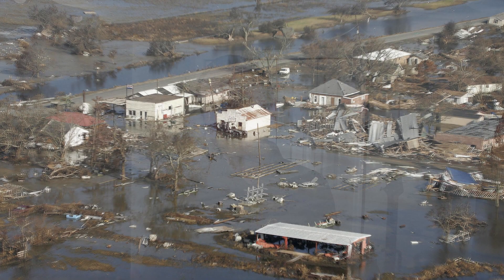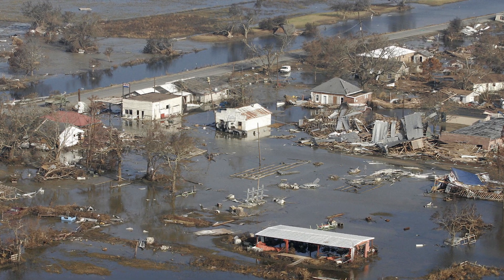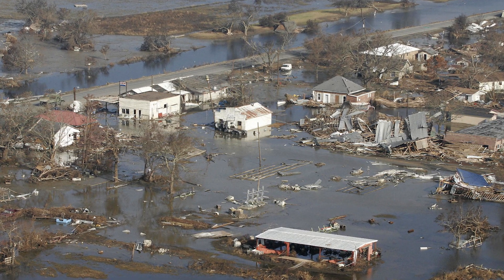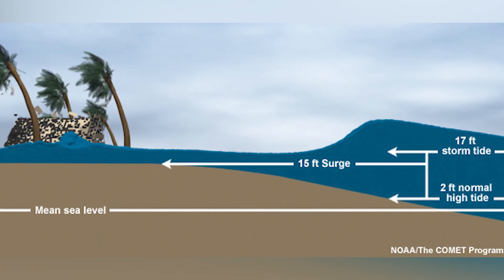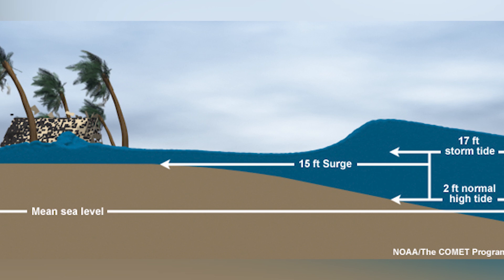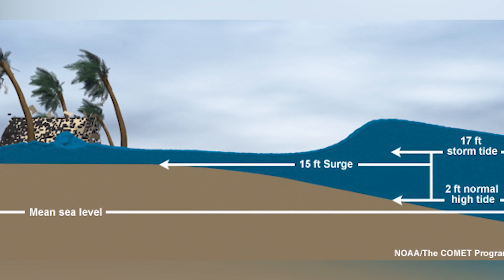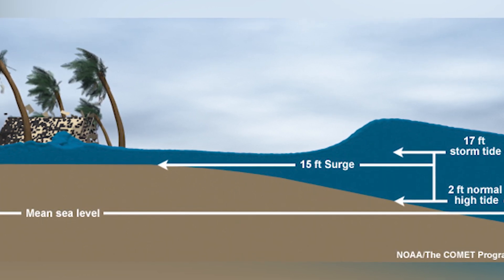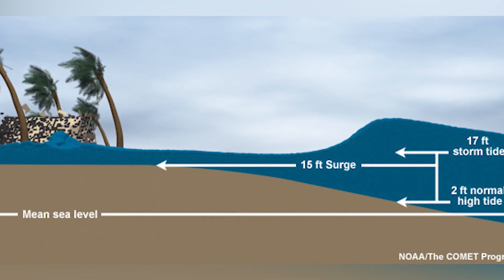Now when it comes to hurricane landfall damage, far and away, infrastructure damages are related to storm surge. But the question is, what is storm surge? Storm surge is simply the height of the water caused by the hurricane — that difference over what it would have been had the hurricane not been there for a regular high and low tide.